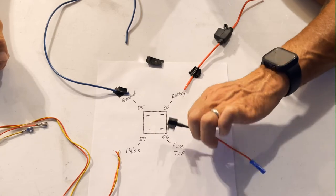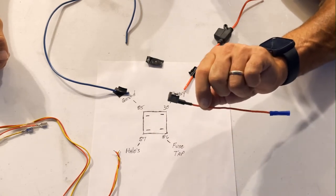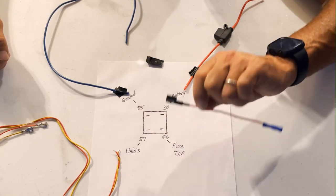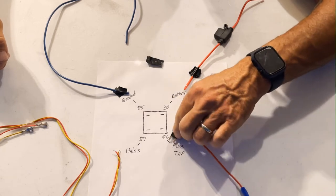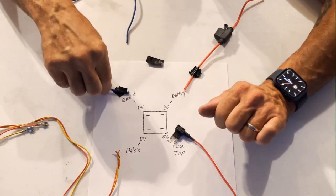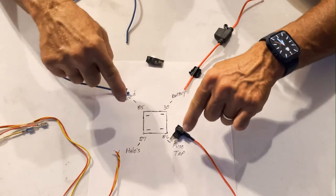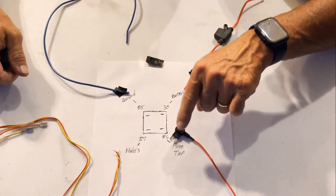What that does is it takes any draw off of this. There's no draw on this. Only the magnetic pull because you have this and you have this and that's going to create a magnetic pull and close the switch.